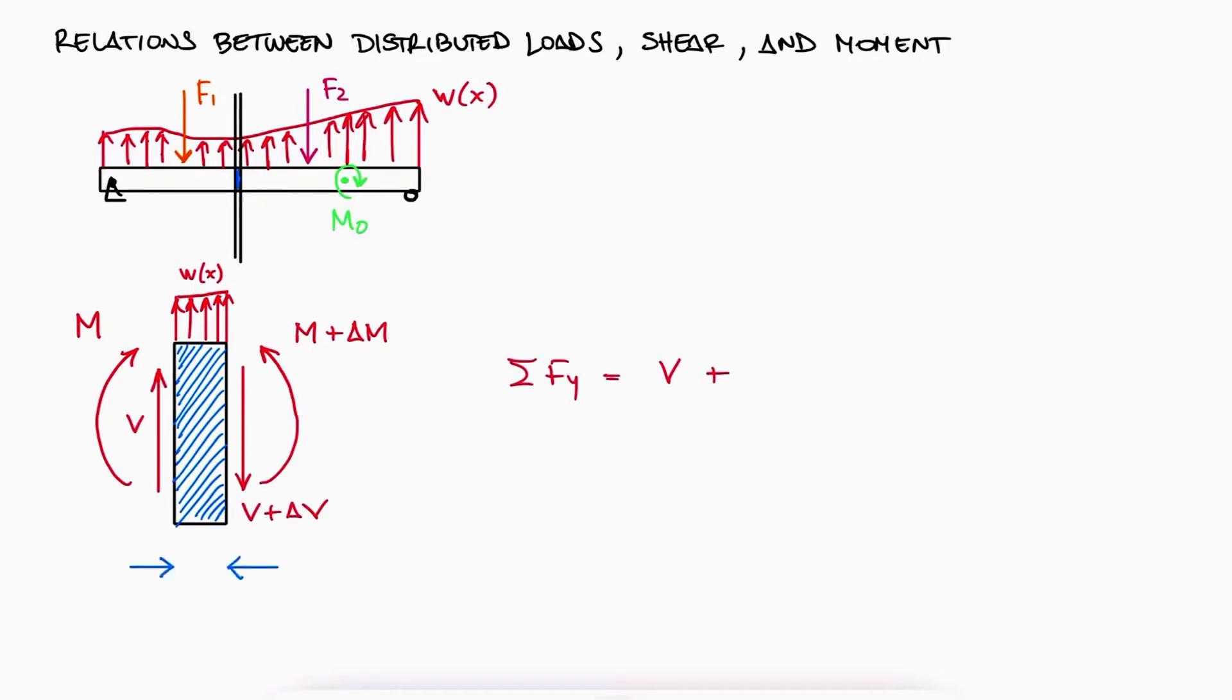For a sum of forces in Y, we have the two internal shear forces and the force resulting from the distributed load, W(x) times the length. This means that delta V is equal to W(x) times delta x.